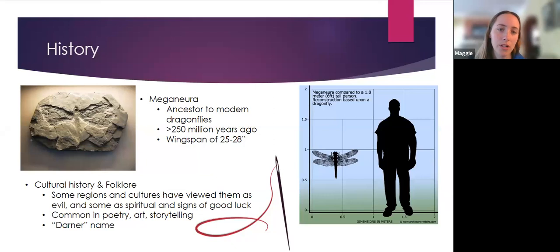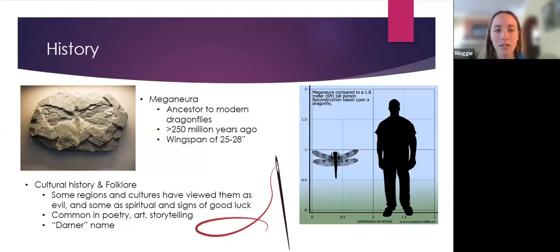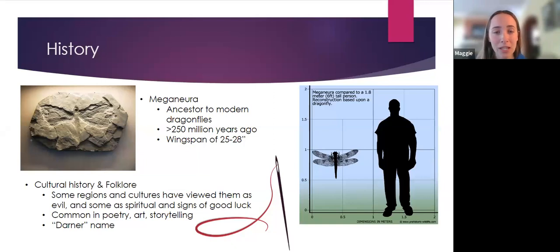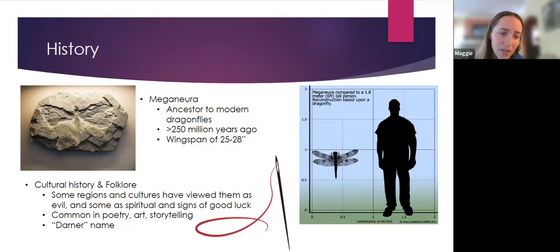Going into the history of dragonflies — just before the dinosaurs, there was a giant organism very similar to a dragonfly called Meganeuropsis. This creature had a wingspan of about two feet, and it is thought that dragonflies are related to this species. There's also a lot of history and folklore when it comes to dragonflies, with different cultures viewing them very differently.